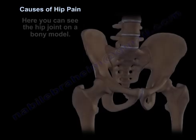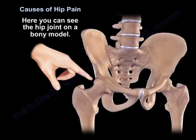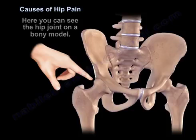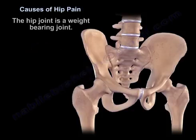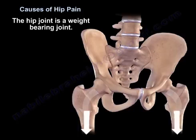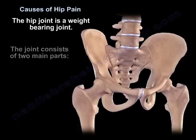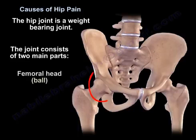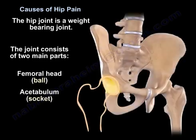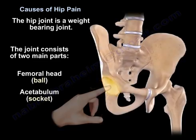Here you can see the hip joint on a bony model. The hip joint is a weight-bearing joint. The joint consists of two main parts: the femoral head, which is a ball, and a socket. The socket is called the acetabulum.